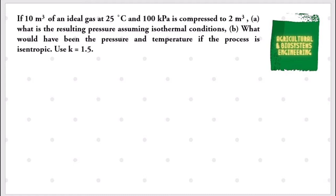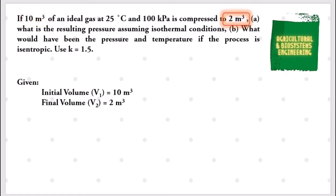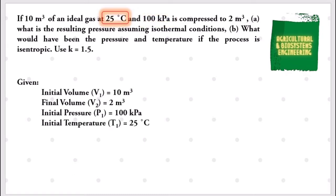The very first thing we need to identify are the given values. We have our initial volume of 10 cubic meters, our final volume of 2 cubic meters, our initial pressure of 100 kilopascals, our initial temperature of 25 degrees Celsius, and lastly, our adiabatic exponent, symbolized by k, of 1.5.